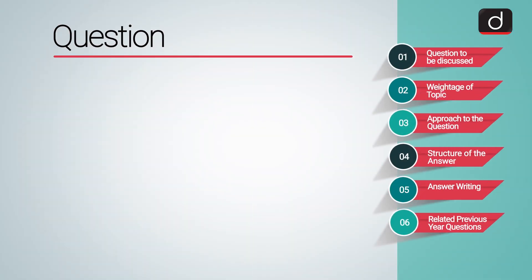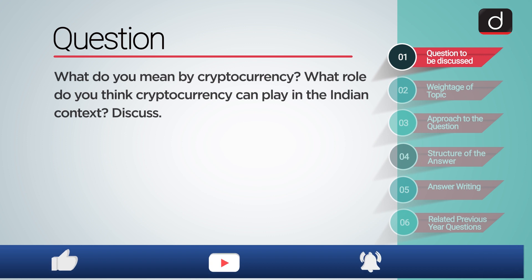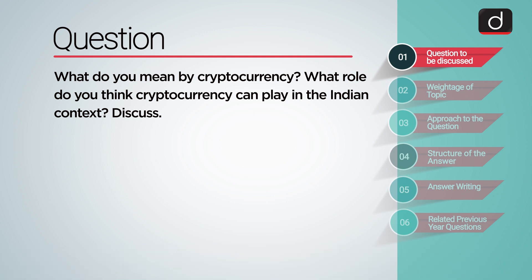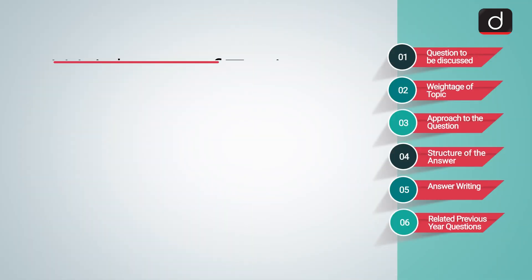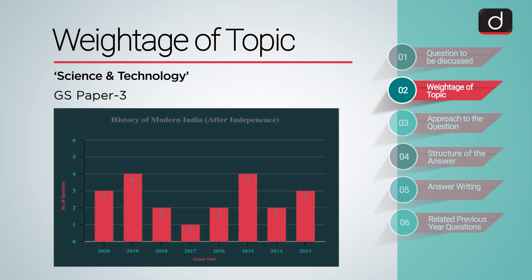Let us look at the question which we will be discussing today: What do you mean by cryptocurrency? What role do you think cryptocurrency can play in the Indian context? Discuss. The question can be narrowed down to Science and Technology, which is part of GS Paper 3. The importance of the topic over the years can be assessed from the graph that has been displayed.